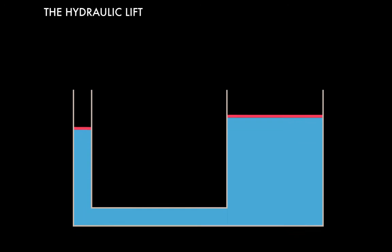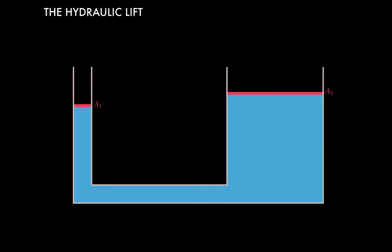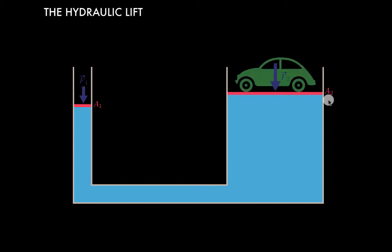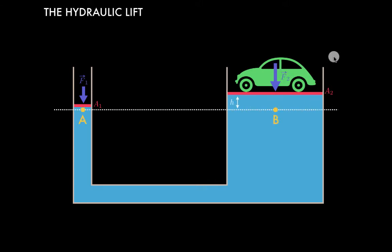Let's return to our hydraulic lift. We're going to specify that the piston on the left has an area A1 and the piston on the right has an area A2. We can apply a force F1 to the piston on the left and a larger force F2 to the piston on the right. This is a hydraulic lift, so in this case we're going to be lifting a car. We'll approach this by calculating the pressure at two different points in the fluid at the same height.